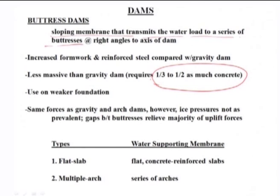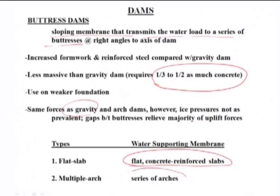The types of buttress dams are: first, flat slab — a flat concrete reinforced slab; and second, multiple arc — a series of arcs. These are the two main types of buttress dam.